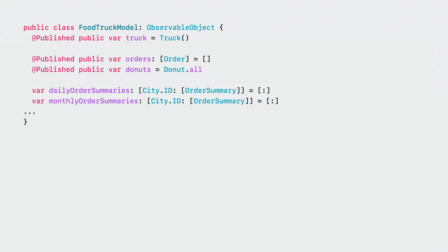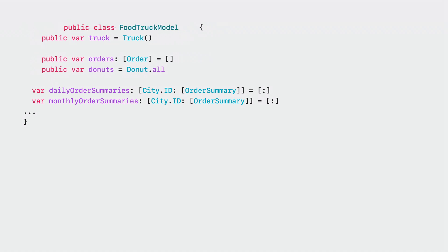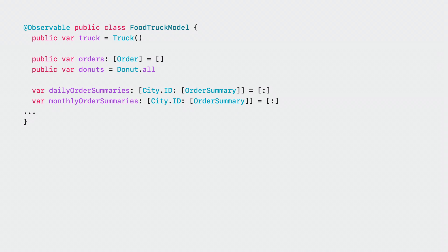Before the change, the food truck model type had an ObservableObject conformance and a number of properties marked with the @Published property wrapper. Changing over to the @Observable macro was easy — all we needed to do is remove the ObservableObject conformance, remove @Published, and mark it with the @Observable macro.